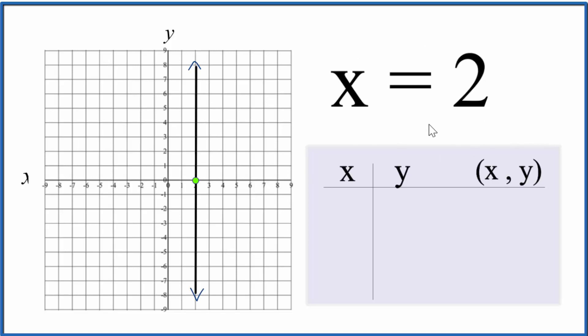Let's plot some points just to make sure we got this right. So x equals 2, x always equals 2. So we can put 2, 2, 2, and then y. That can really be anything we want, it's not written here.